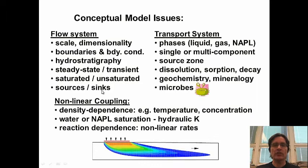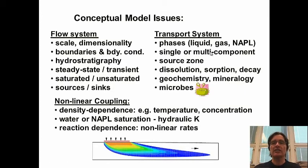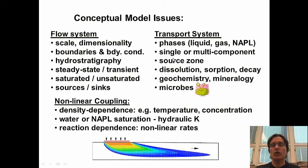With regard to the transport system: we might have many phases — liquid, gas, non-aqueous phase, or residual — do we need to include all these phases or just one or two critical ones? Can we simulate a single component or do we need to simulate all components? For instance, in a mixture of gasoline, how many components do we need to simulate? These are very important conceptual questions that will have a huge impact on the effort needed and the time required to develop the model. How will we include our contaminants — as a boundary condition or as an internal existing source, such as a residual phase?